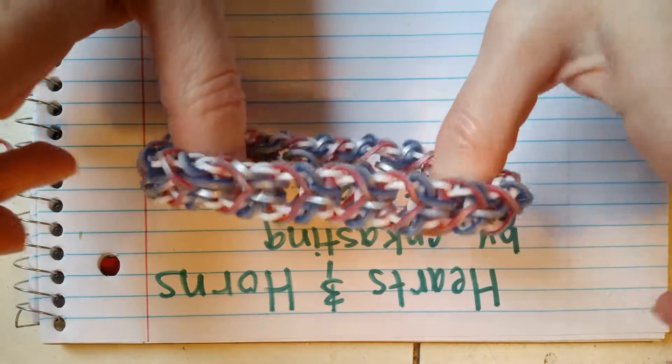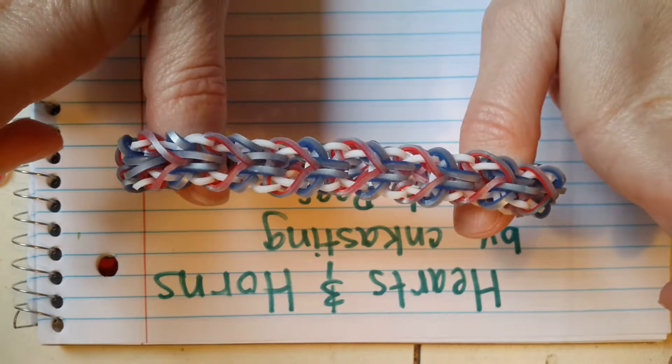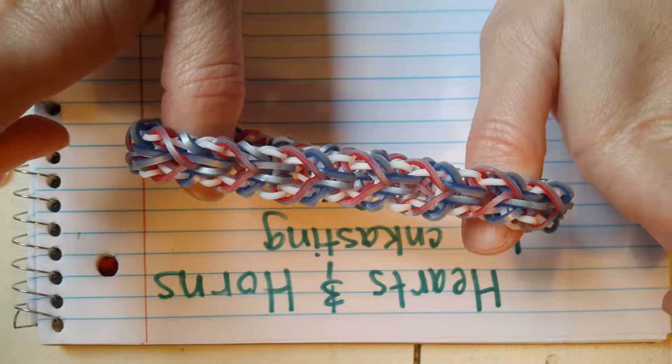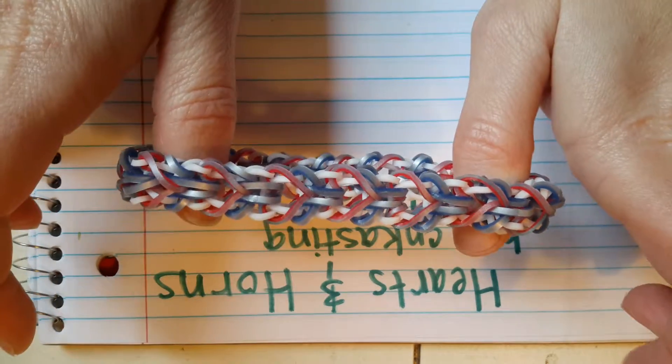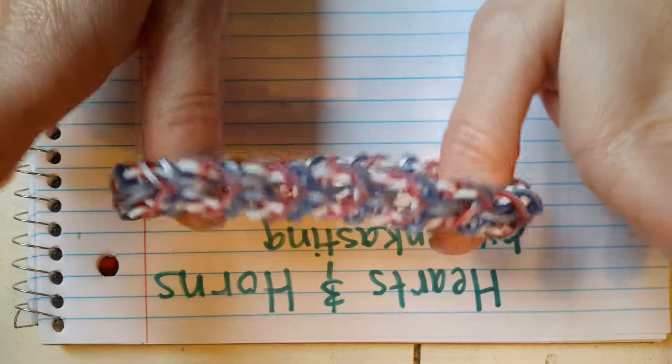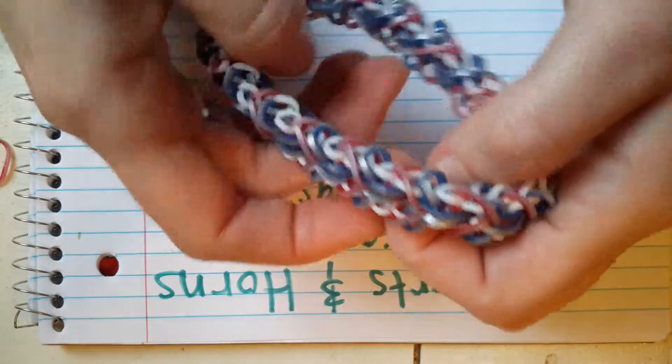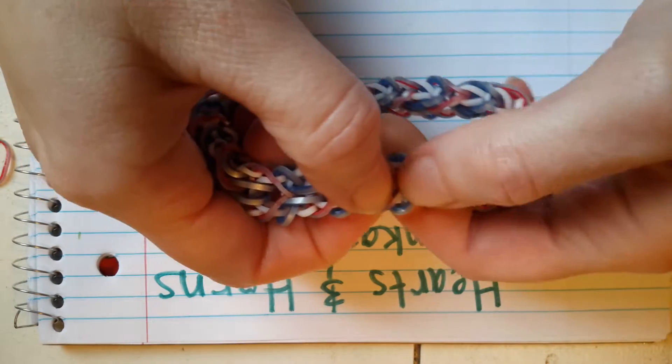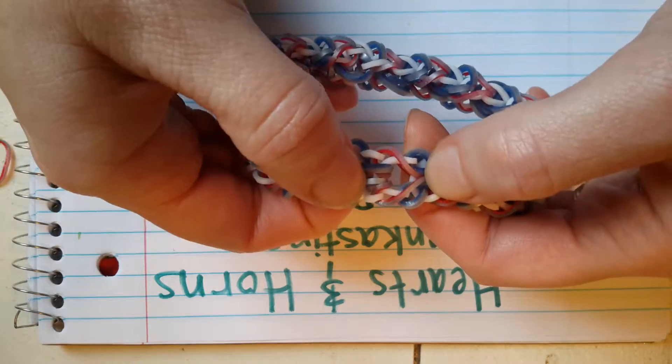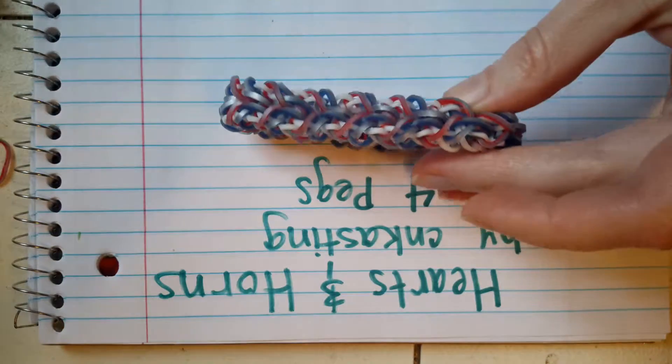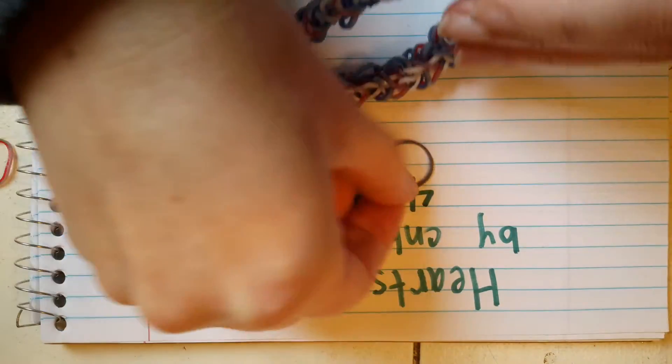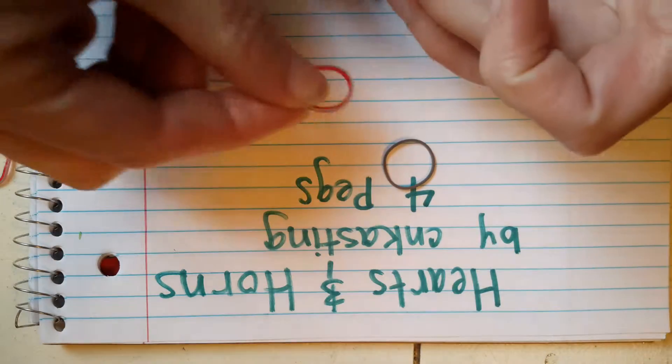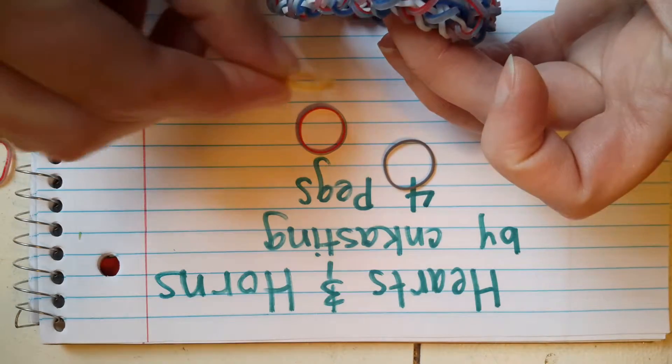It's kind of a combination of the Aries bracelet and the heart links bracelet. So Aries is a ram's head and rams have those outward curling horns, so that's this part, the horns, and then of course there's the heart. So today I'm going to do this bracelet in gray instead of white, red for the hearts and gold for the horns.